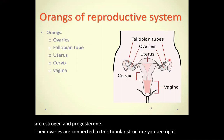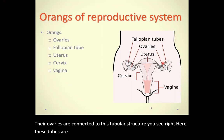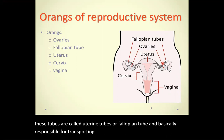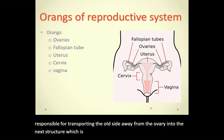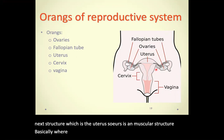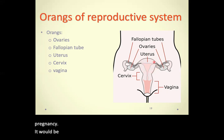The ovaries are connected to these tubular structures called the uterine tube or fallopian tube, which are responsible for transporting the oocyte away from the ovary and into the next structure, which is the uterus. The uterus is a muscular structure where the fetus or embryo starts to grow.